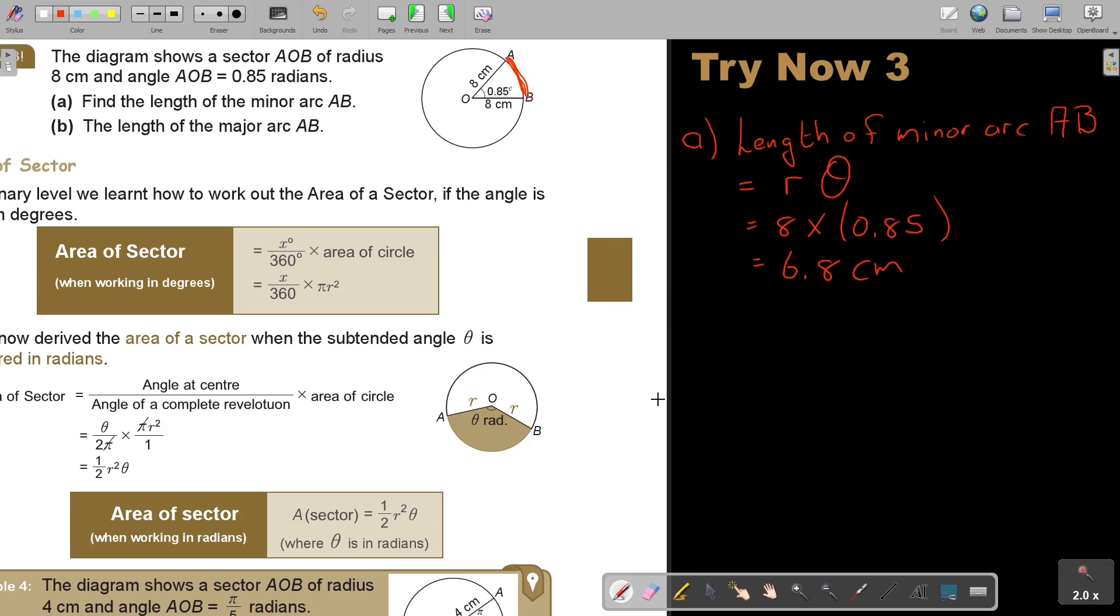And then the next one, the length of the major arc. Now, don't forget, this is in radians, so I must first subtract. So if I want to start with B, I must first say angle - I must first get the angle of the major arc sector. And that will be 2π minus 0.85, and that will be 5.43... work out this π. And first don't approximate it, leave it unapproximated.